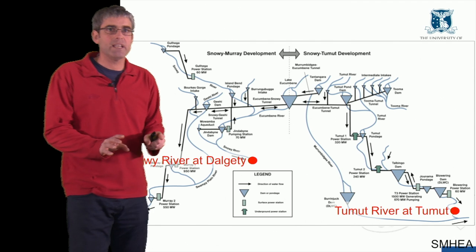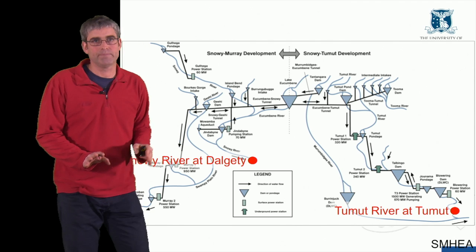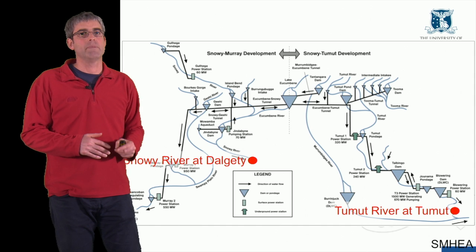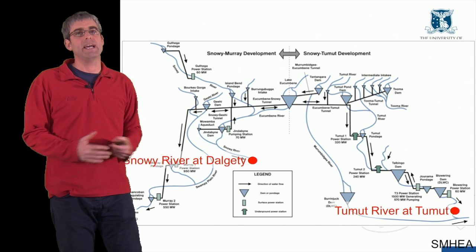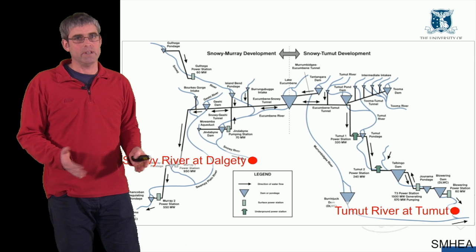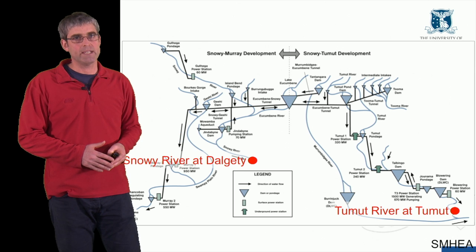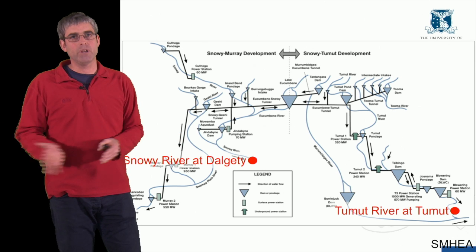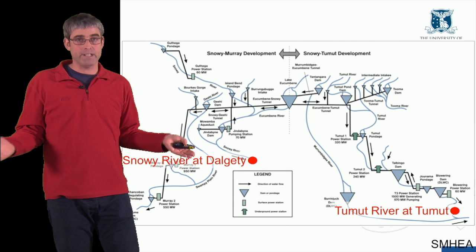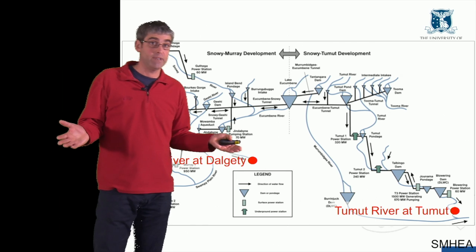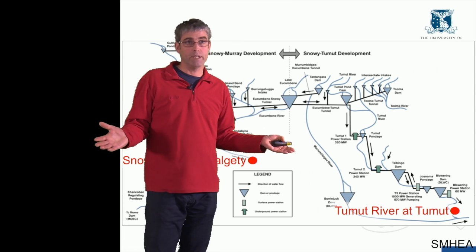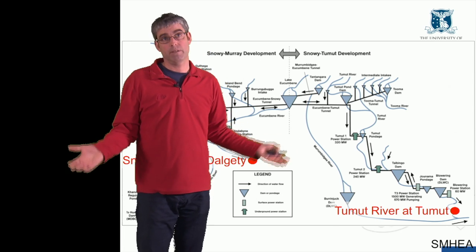Now let's apply this concept. The idea is that the channel has adjusted to transport the flow and sediment at that effective discharge — in this case 57 metres cubed per second. So if we decrease the flows, the channel is going to adjust to accommodate a smaller flow; or if we increase the flow, we're going to get an adjustment to accommodate that increased effective discharge.